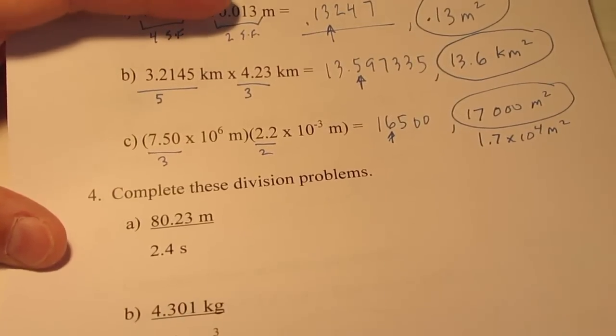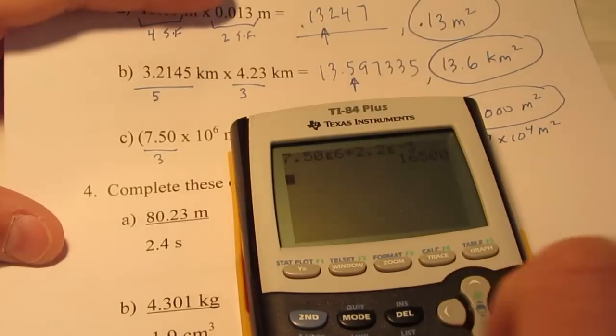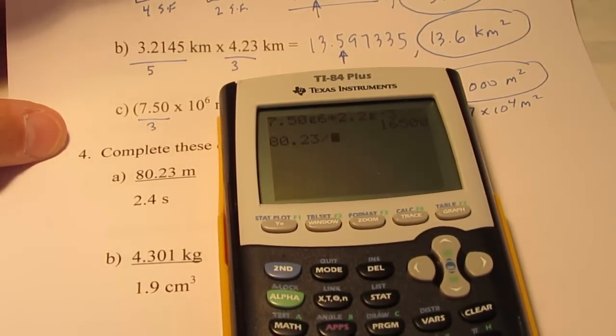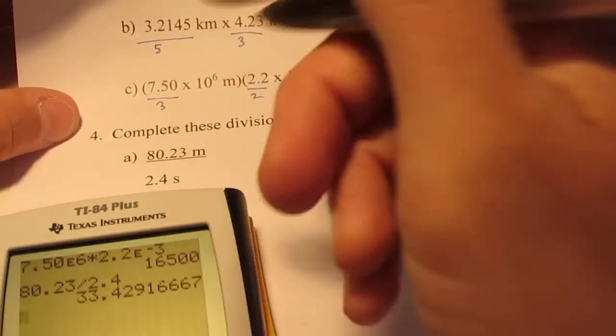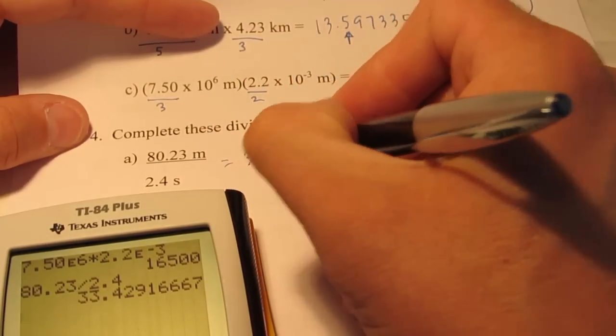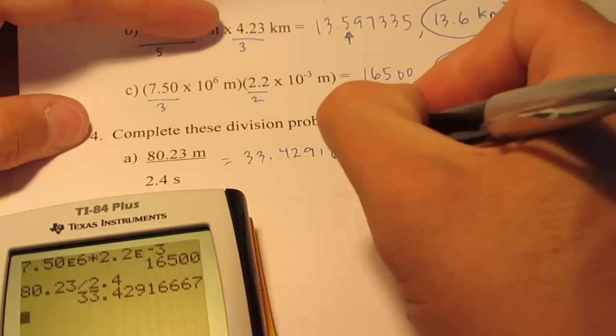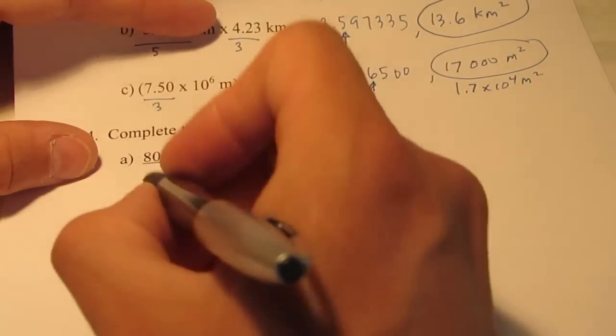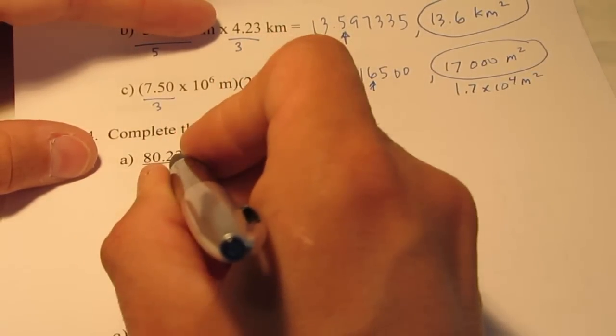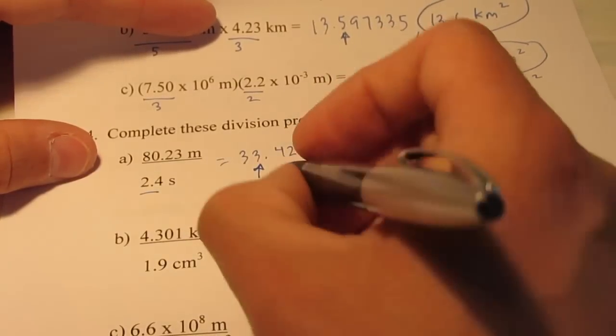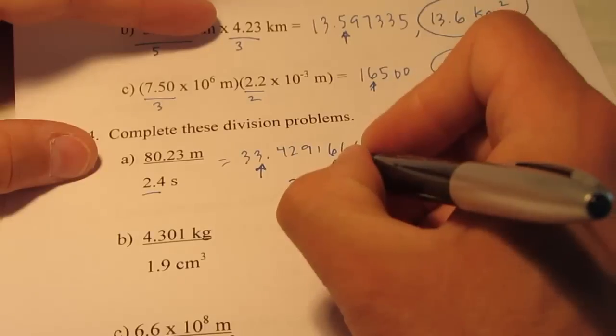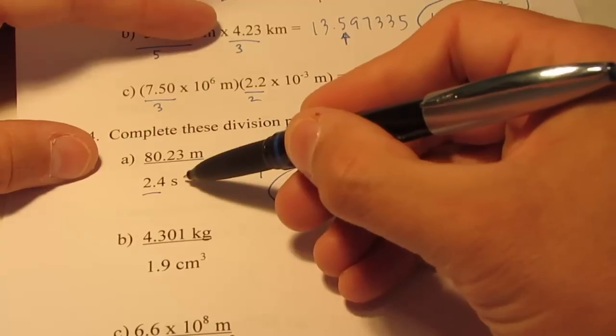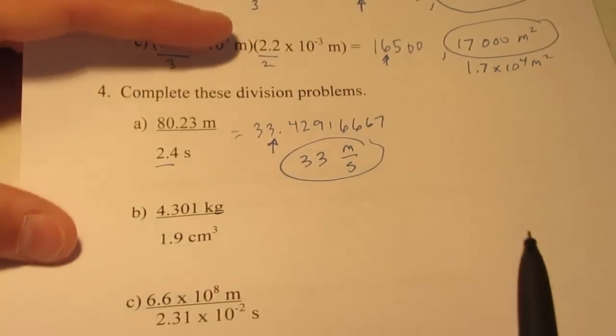The division rules are the same as the multiplication rules. So, let's just push these in. 80.23 divided by 2.4. My calculator says 33.42916667. Obviously, way too many significant figures. This measurement has two sig figs. This has four. My answer can have two sig figs. So, I'd round that off to 33 meters per second. The unit is meters divided by seconds here. So, that's meters per second.